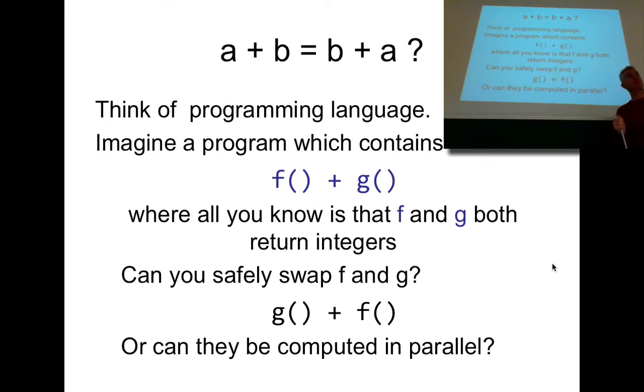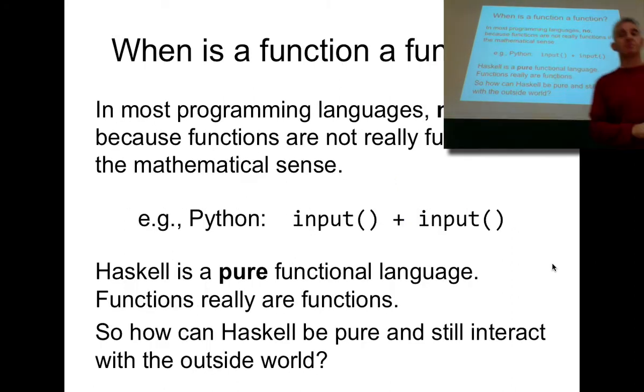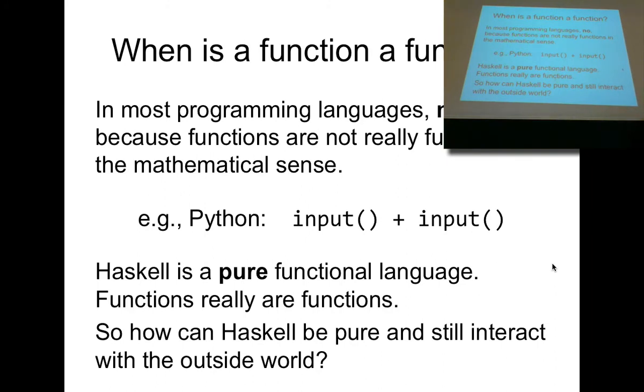Haskell expressions, Haskell programs, are in a certain sense free of side effects. There are no side effects. Now that may seem strange, but in Haskell functions, when we say we're defining a function or a value, think of a value as a function with no arguments, these are real functions in the sense that whenever you apply the same arguments to a given function it will always give you the same result.